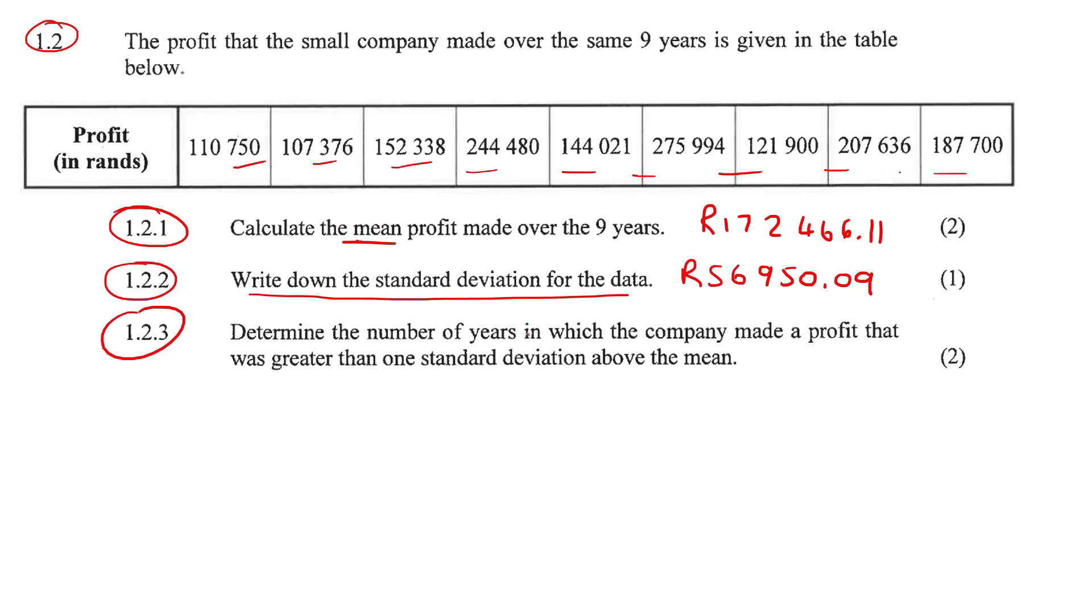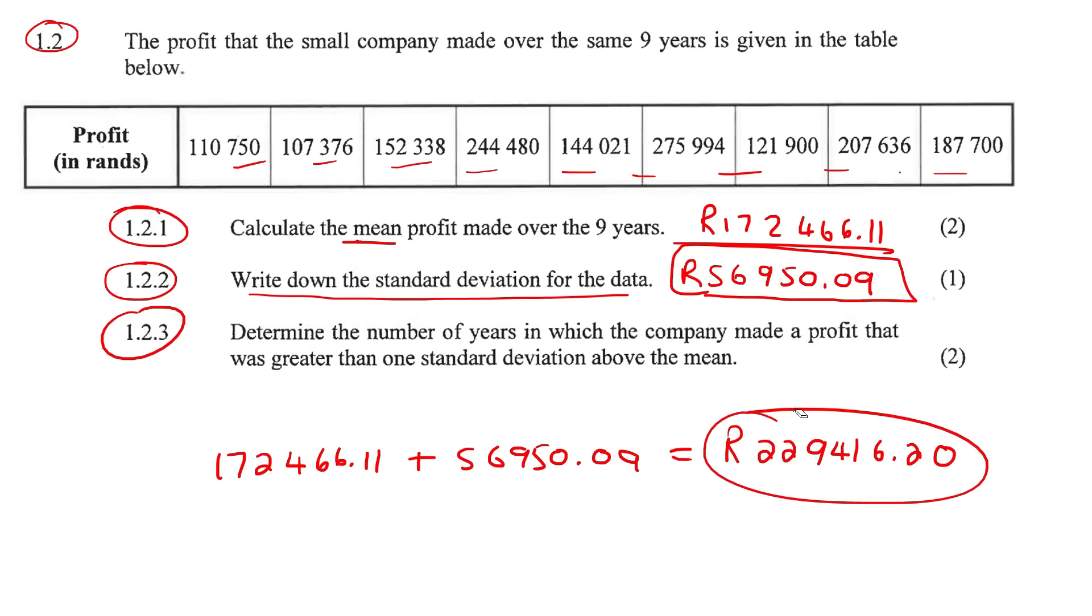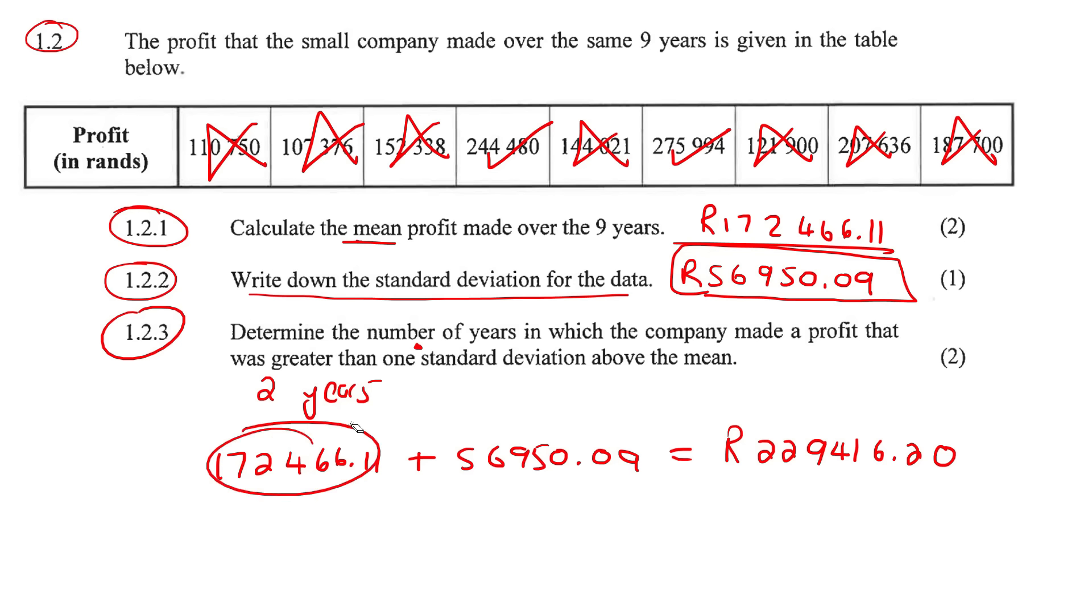Now it says determine the number of years in which the company made a profit that was greater than one standard deviation above the mean. Okay. So the mean is this number. So you take that number 172,466.11. Now it says, determine the number of years in which the company's profit was one standard deviation, which is that number above the mean. So we're just going to add 56,950.09 and let's just see what that gives us. That'll be 229,416.20. So it says, determine the number of years when the profit was more than that. So let's see how many years the profit was more than that. This one is yes, this one is a yes. So it's only going to be two years. If they said two standard deviation, then you would just add two of these. And if they said less than, well, then you would just minus, you take this number and you would minus that one.